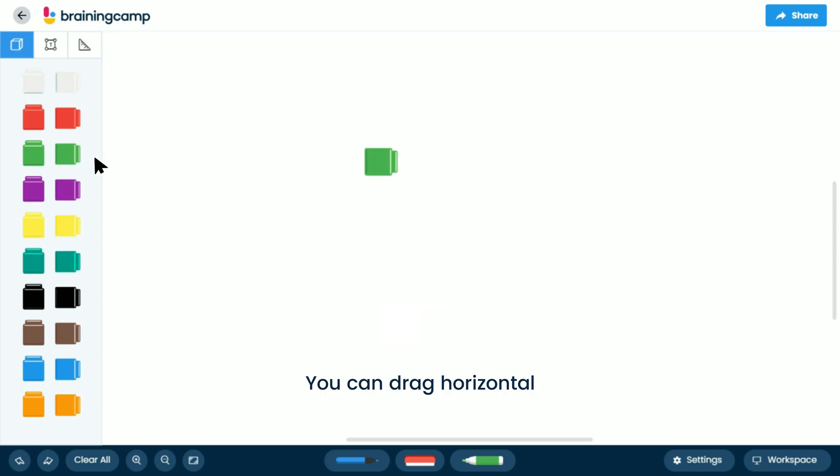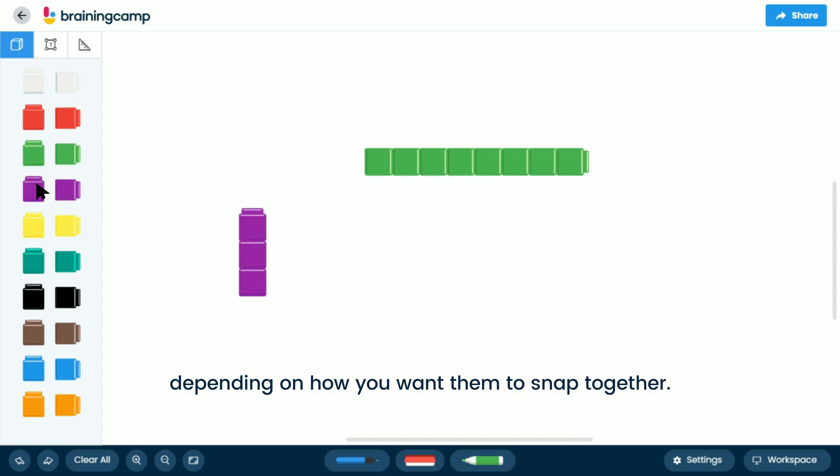You can drag horizontal or vertical cubes, depending on how you want them to snap together. Once linking cubes have been placed on the workspace, select them to see their menu of options and operations.